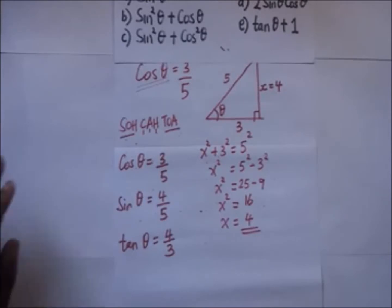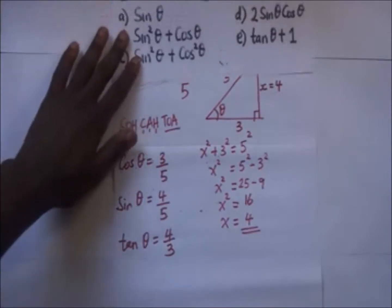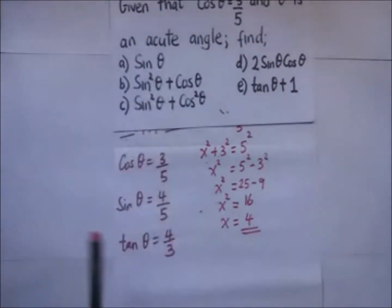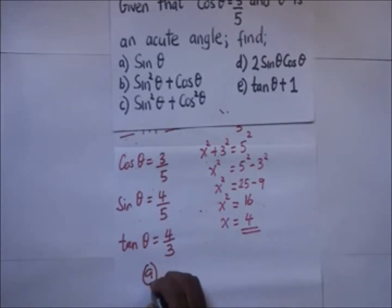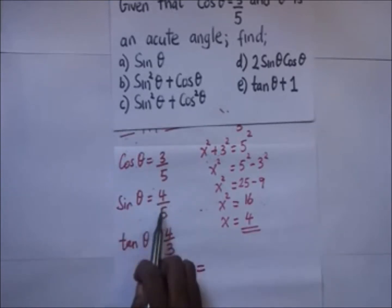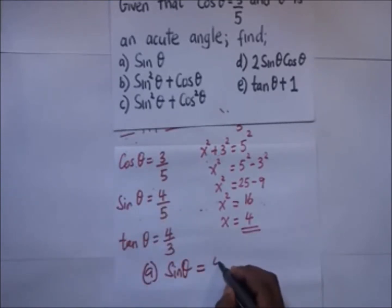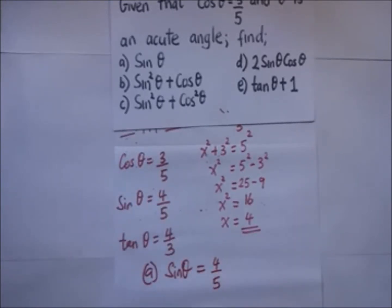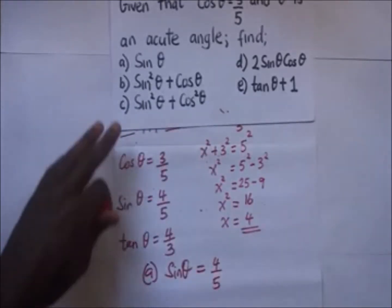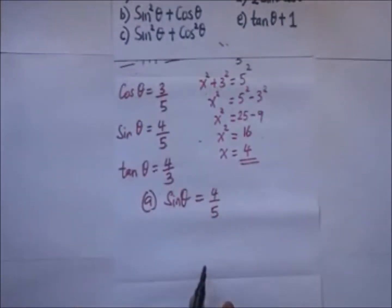The first part of the question asks us to find sine of theta. Part a: sine of theta equals four over five.